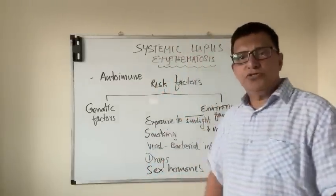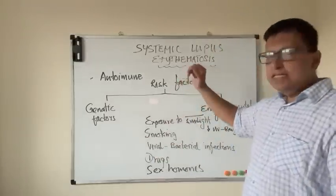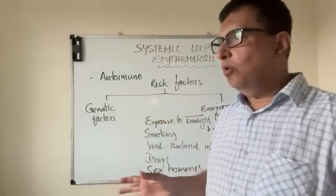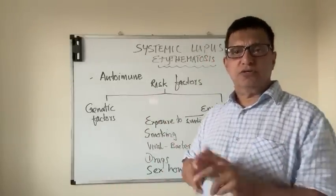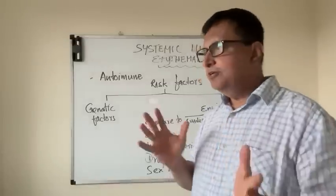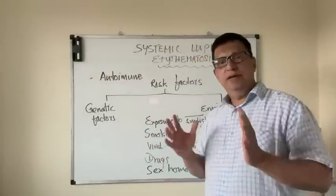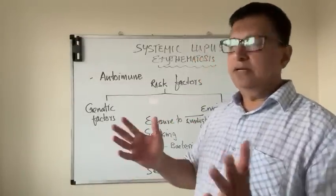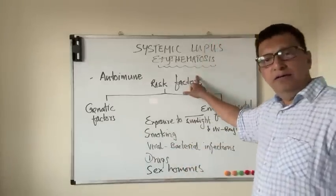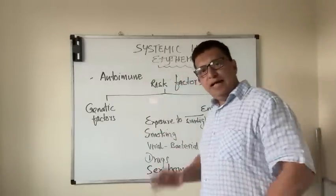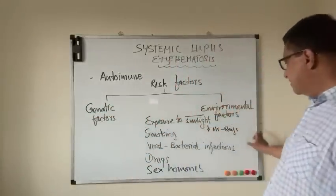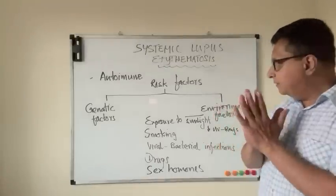SLE, or systemic lupus erythematosus, is an autoimmune condition which affects almost all the organs of the body and causes bizarre symptoms. The male to female ratio is very high — nine females to one male. There are a lot of risk factors, both genetic and environmental.